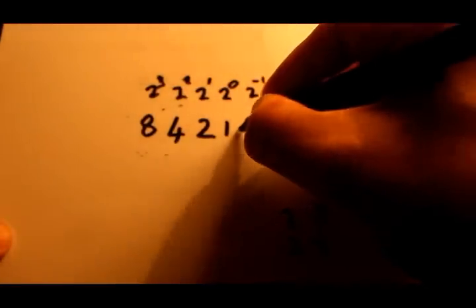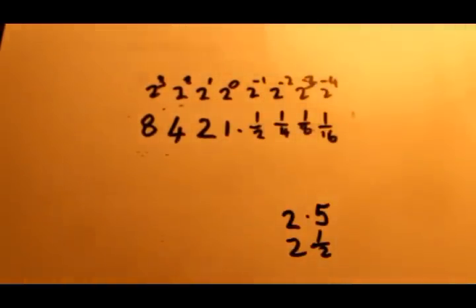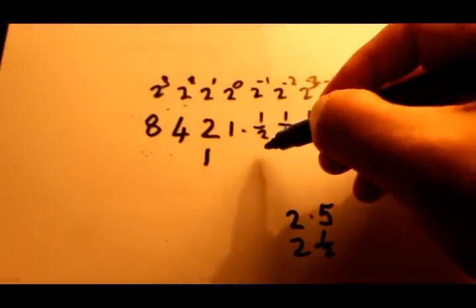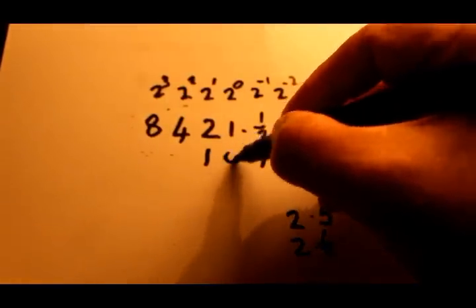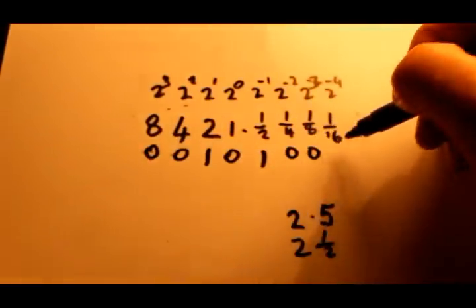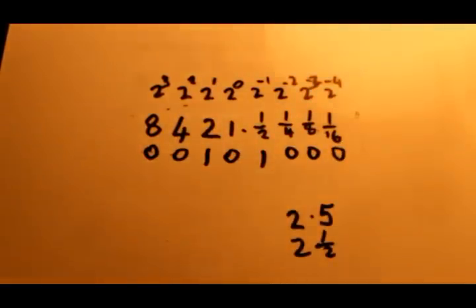And if we put a decimal point there, we can now represent the number 2.5 using a fixed-point binary number. All we simply do is place a 1 in the 2s place and a 1 in the half place, and then fill the rest in with zeros. As long as we know where the decimal place is, we don't have to even show the decimal point. The number would be 0010100, and that would be our representation of 2.5.